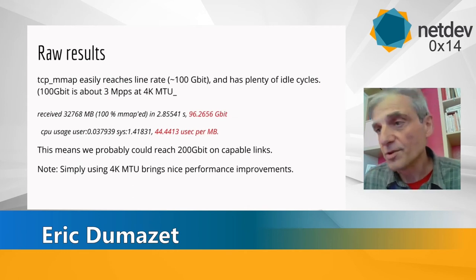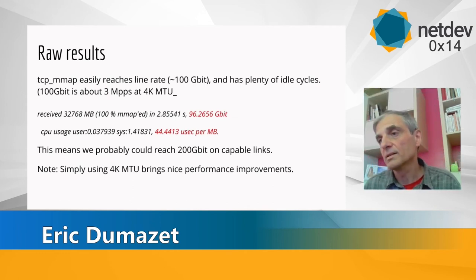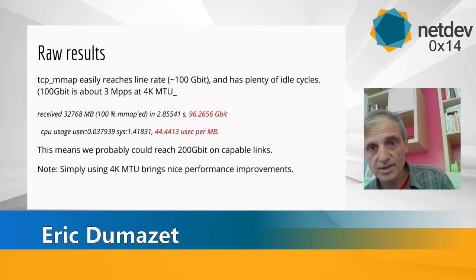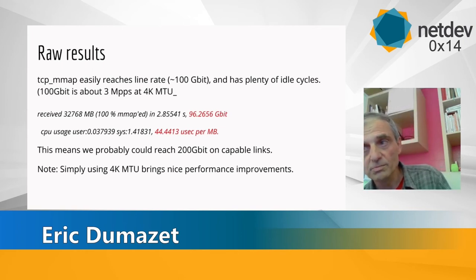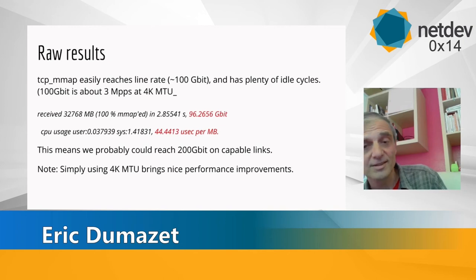The raw results are quite good: instead of being limited to 80 Gbps by the kernel-to-user copy, we can now reach line rate easily, and it seems we could probably reach 200 Gbps line rate. The problem is I don't have such a NIC right now, so I can't confirm that.